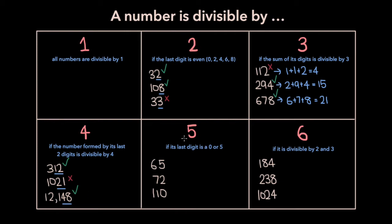A number is divisible by 5 if its last digit is 0 or 5. The last digit in 72 is 2, so it's not divisible by 5. And the last digit in 110 is 0, so it is divisible by 5.